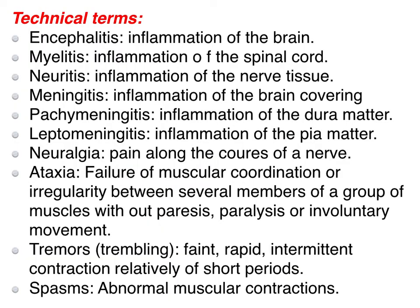First we talk about some technical terms used in the clinic, such as encephalitis — inflammation of the brain; myelitis — inflammation of the spinal cord; neuritis — inflammation of the nerve tissue; meningitis — inflammation of the meninges, or brain covering.